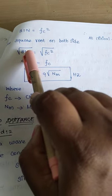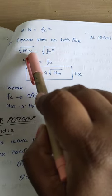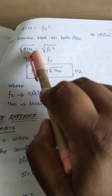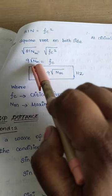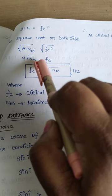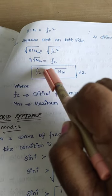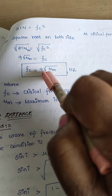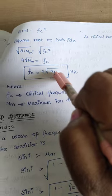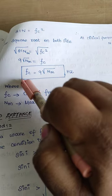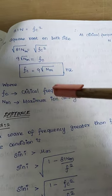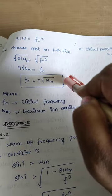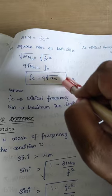Taking the square root on both sides: square root of fc² = square root of 81n, which gives fc = 9 × square root of nm. So the critical frequency fc = 9√nm, where fc is the critical frequency and nm is the maximum ion density. We will use this expression for solving problems as well.